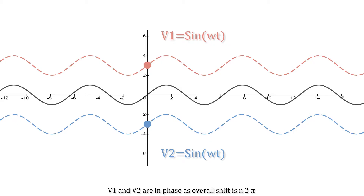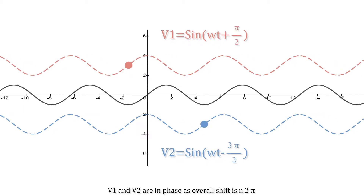Understanding phase: we've got two voltages with a reference voltage — V1 and V2. If the overall phase shift between them is a multiple of 2 pi, then they're said to be in phase; they're happening at the same time in the same direction. Here V1 has a phase lead of pi over 2 radians, and V2 is lagging a normal sine wave by 1.5 pi radians. But the overall phase shift between the two is a multiple of 2 pi, so V1 and V2 are still in phase with each other.